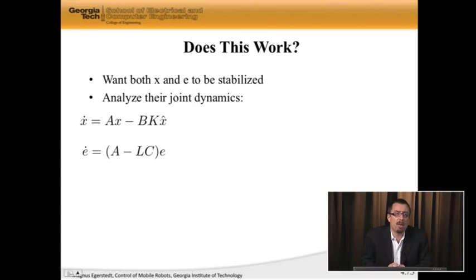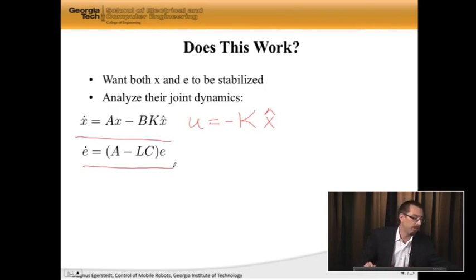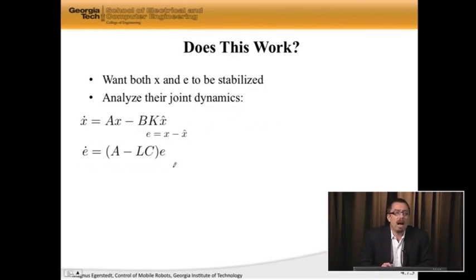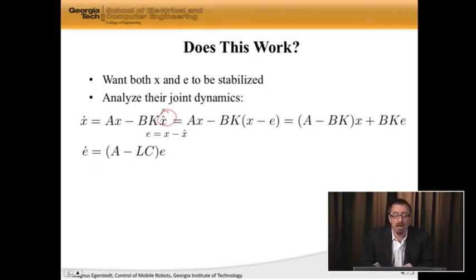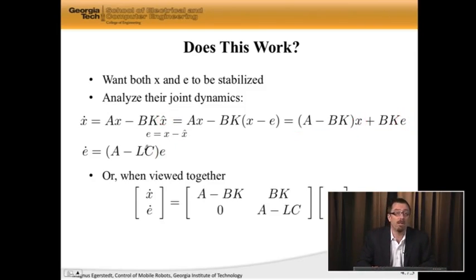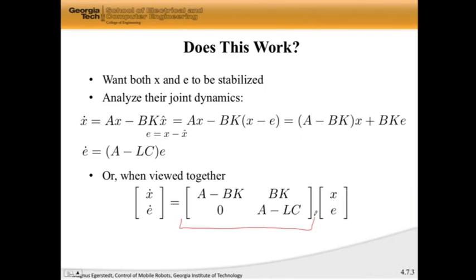x dot is Ax plus Bu, but u is, if you remember, u is minus K, not x, but x hat, which is why I get my x dynamics to look like this. My e dynamics, the estimation error dynamics, is what it has always been. Let's simplify this a little bit. I know that the error is x minus x hat, so I can replace this x hat with x minus the error. Then I get my dynamics after some push-ups to be (A minus BK)x plus BKe. Now I have something that involves x and e, and here it only involves e. So now I can actually write everything in a joint way. x dot, e dot is this large matrix now that's not n by n but 2n by 2n, times x and e.